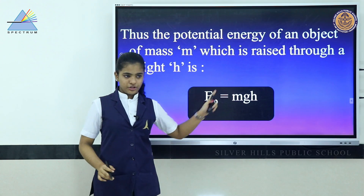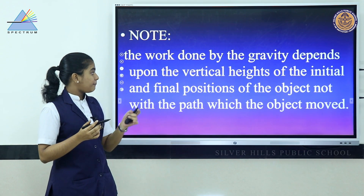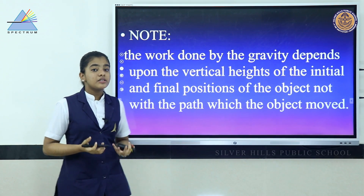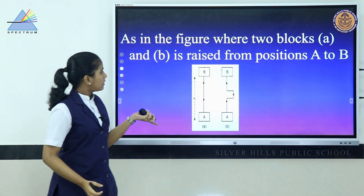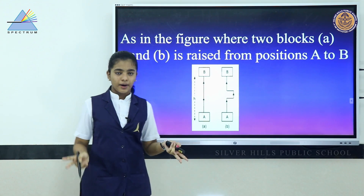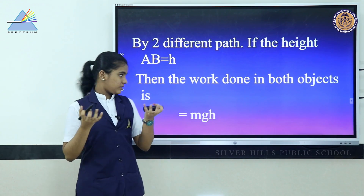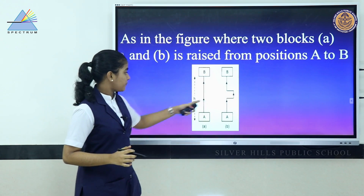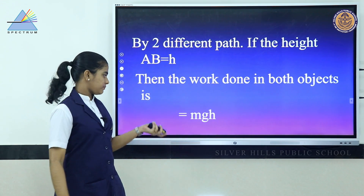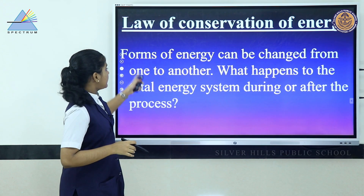The work done by gravity depends on the vertical height between the initial and final positions, not the path through which the object is moved. As shown, two blocks raised through two different paths to the same height h will both have the same work done on them: mgh.